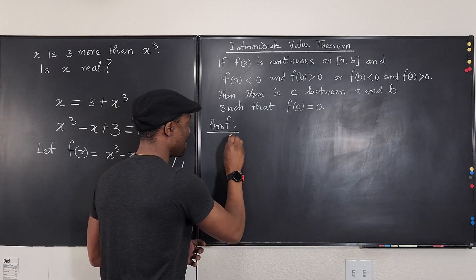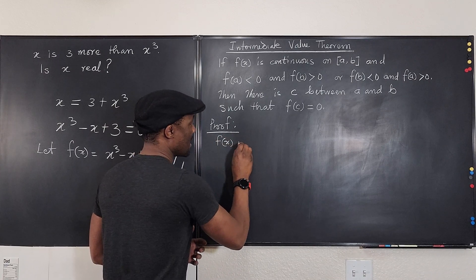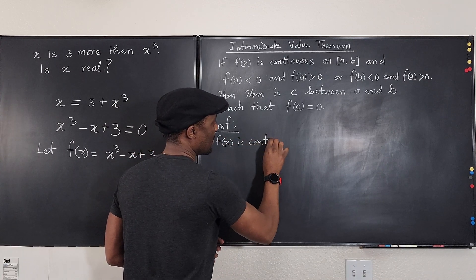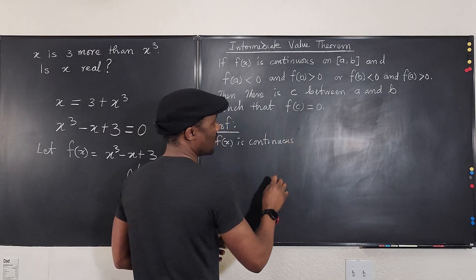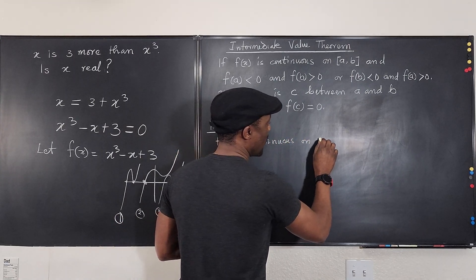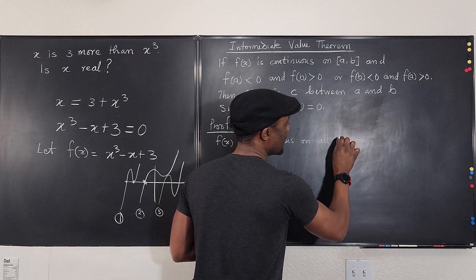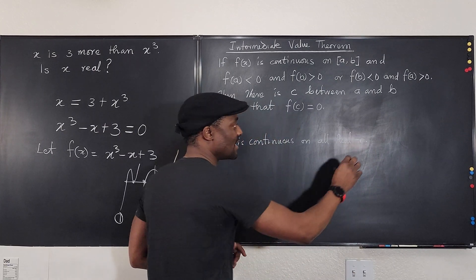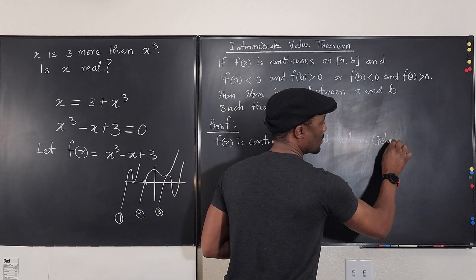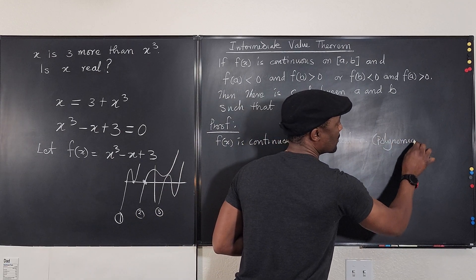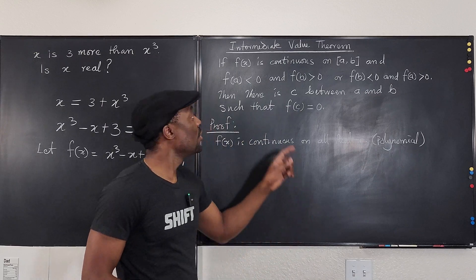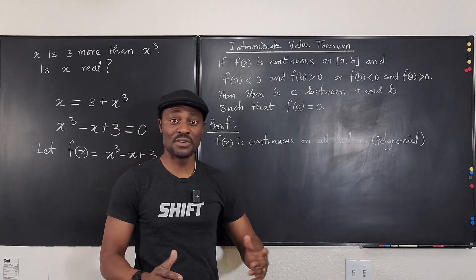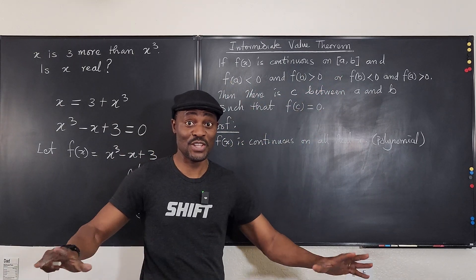So you're going to say that f(x) is continuous on all real numbers, all real x. Let's write it that way. Why? Because it's a polynomial. And because it's a polynomial, you can use the Intermediate Value Theorem for it. That's the only condition you need to satisfy.